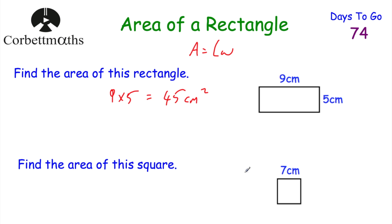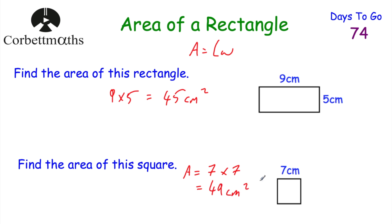Our next one: we've been asked to find the area of this square. We do the length multiplied by the width. Because it's a square, the length and the width are equal to each other, so we're going to do 7 times 7 or 7 squared. The area would be equal to 49, and our units would be centimetres squared. Well done if you got those both right.